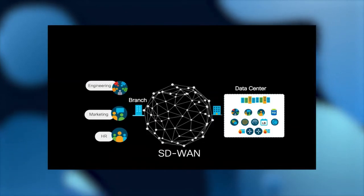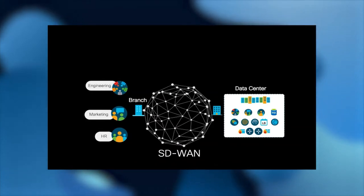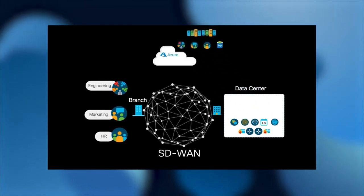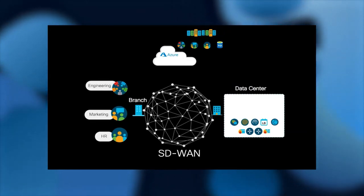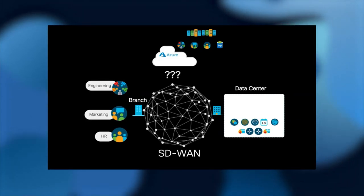On the left side, you see an SD-WAN branch with multiple teams accessing applications in a data center. In recent years, applications have been moving from on-premises data centers to Azure for multiple reasons, including cost-saving and agile development.